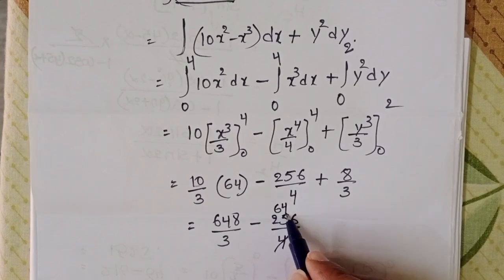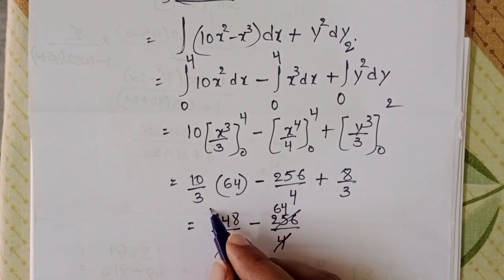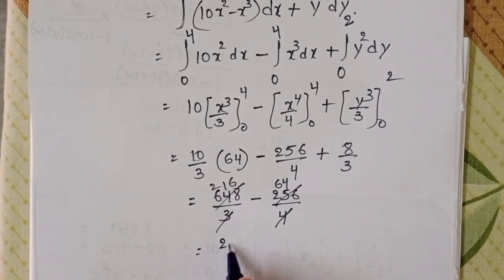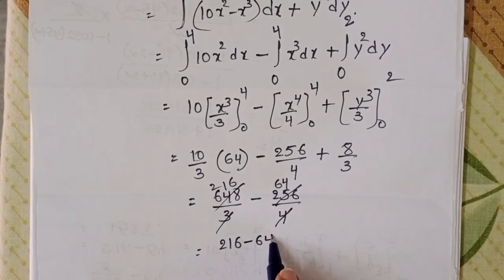648 divided by 3 is 216, 256 divided by 4 is 64. So 216 minus 64.